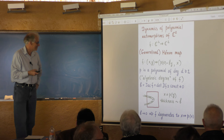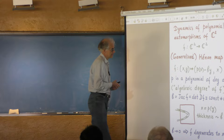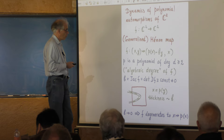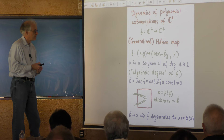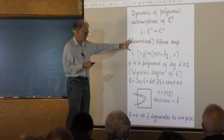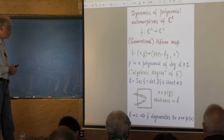Here is the basic setting. We are interested in dynamics of complex polynomial automorphisms of C², and the basic example is a generalized Hénon map — a map that has this explicit form, where P of X is some polynomial of one variable of degree at least two. It looks like a quite special example, but it is actually very representative, and the general theory is developed along exactly the same lines. Everything I will say applies to general non-trivial polynomial automorphisms of C².